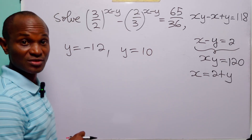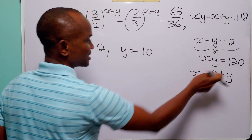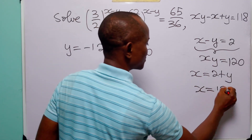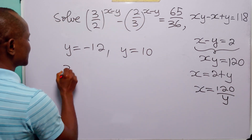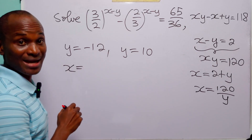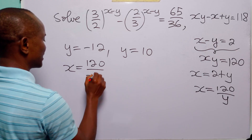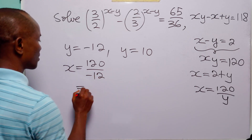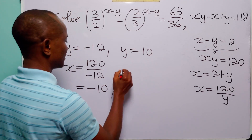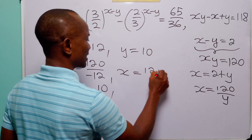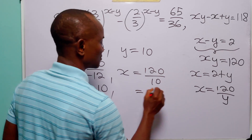Now that we have values for y, to find the values of x we use the equation x equals 120 over y. When y equals minus 12, x equals 120 divided by minus 12, which is minus 10. And when y equals 10, x equals 120 divided by 10, which is 12.